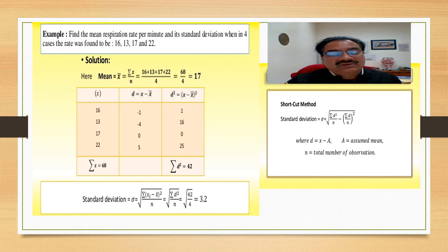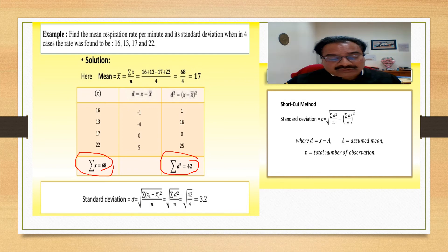d means this deviation x minus x bar. So, minus 1, minus 4, 0 and 5. d square: 1, 16, 0 and 25. This sum is 68 and the d square sum is 42. Now, you will put the value here. The summation of x i minus x bar whole square by n. The summation of d square by n, 42 by 4 is 3.2. Here, you will get 3.2.